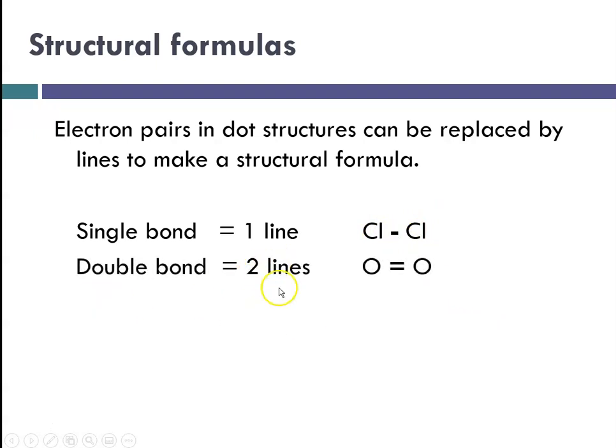A double bond, two lines, would show that there are four electrons. 1, 2, 3, 4. Each line represents a shared pair of electrons, so two electrons per line. And a triple bond, like nitrogen with itself, would be 2, 4, 6 shared electrons.